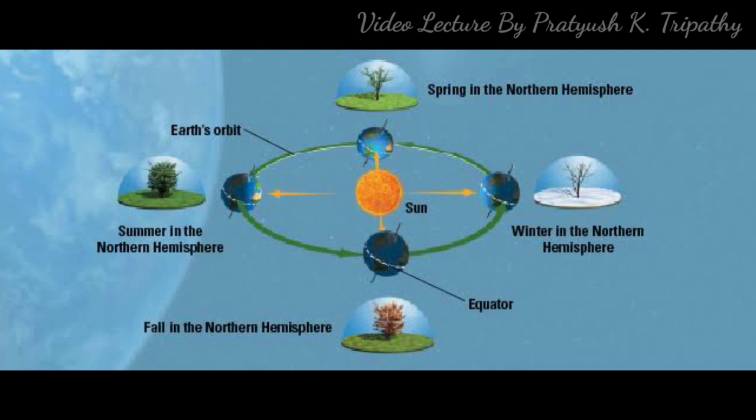If the axis were perpendicular to the plane of the ecliptic, every place on the Earth's surface would have had 12 hours of day and 12 hours of night and there would be no seasons.